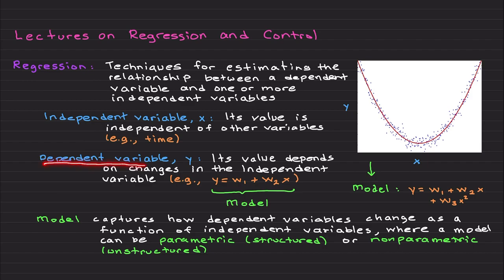Time basically progresses independently than other events. On the other hand, a dependent variable, as you can guess, depends on changes in the independent variable.